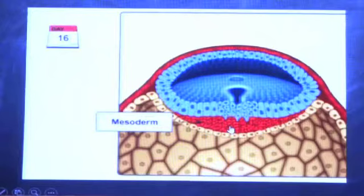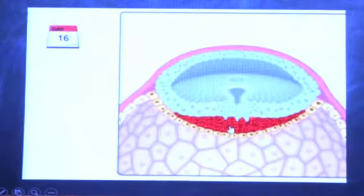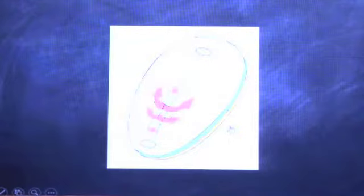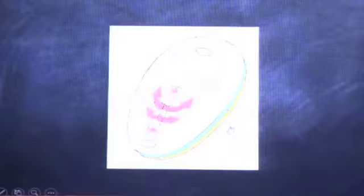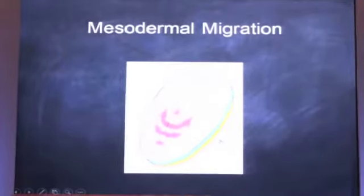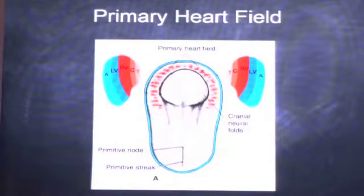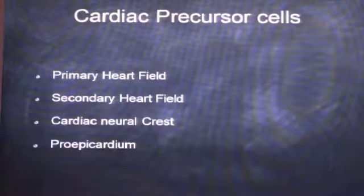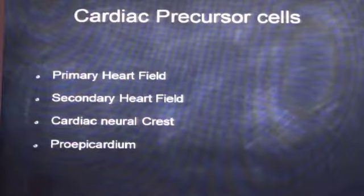Since the mesoderm layer is formed from the primitive streak, these mesodermal cells migrate towards the cranial end of the embryo, where they form something known as the primary heart field. This nomenclature has come recently, and there are four cell lineages which form the heart in the future. The primary heart field is responsible for formation of the endocardial tube — the primary heart tube. The other precursor cells are the secondary heart field, the cardiac neural crest, and the proepicardium. Since these fields have been identified, we can better understand congenital heart diseases occurring at various levels of development.